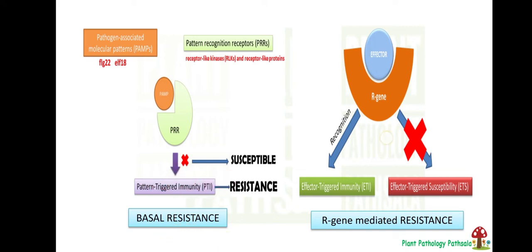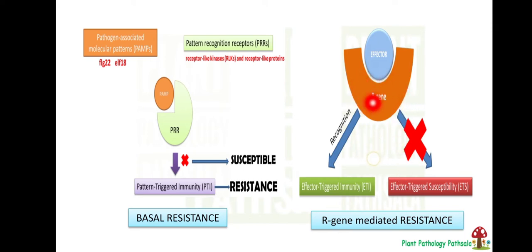The effectors produced by the pathogen break this basal resistance. In turn, the plant also produces R genes or resistant genes to combat these effector molecules and induces ETI or effector triggered immunity, also known as R gene mediated resistance. So in plants, two types of resistance are seen: basal resistance that is PTI, and R gene mediated resistance or ETI.